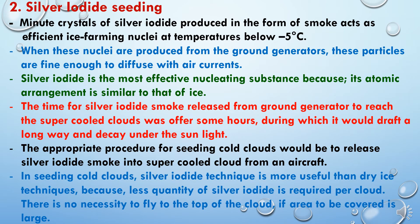The second method of cold cloud seeding is silver iodide seeding. Minute crystals of silver iodide, produced in the form of smoke, act as efficient ice-forming nuclei at temperatures below minus 5 degrees centigrade. When these nuclei are produced from ground generators, the particles are fine enough to diffuse with air currents. Silver iodide is the most effective nucleating substance because its atomic arrangement is similar to that of ice. The time for silver iodide smoke released from a ground generator to reach the super-cooled clouds may take some hours, during which it would drift a long way and decay under sunlight. The appropriate procedure for seeding cold clouds would be to release silver iodide smoke into super-cooled clouds from an aircraft. The silver iodide technique is more useful than dry ice techniques in seeding cold clouds.